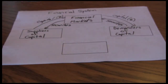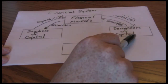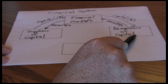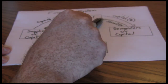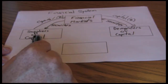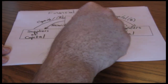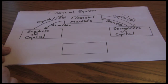Another example: if I want to sell a hundred shares of Toyota stock that I had purchased earlier, I'm a demander of capital sending those securities into the financial markets. Some other investor buys those securities and sends the cash over, which ultimately ends up in my account.